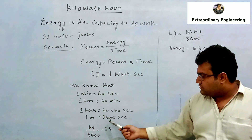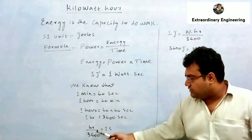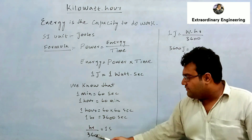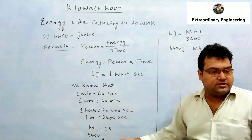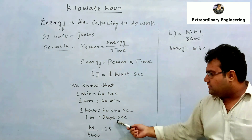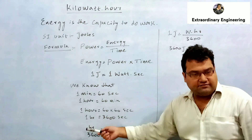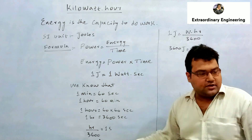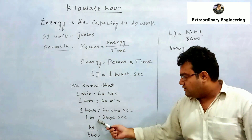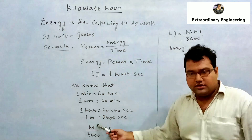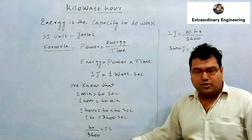Now I will shift 3600 towards the left side of the equal sign, so hour will be divided by 3600. This gives us: 1 second = hour / 3600. This is a rule of mathematics — if something is multiplied by 3600 on one side, moving it to the other side makes it a denominator. So, hour is the numerator and 3600 is the denominator.